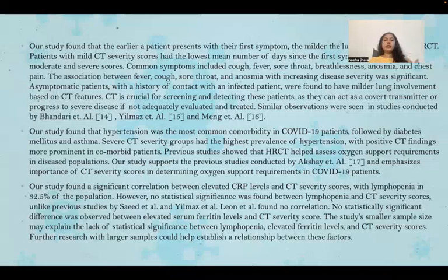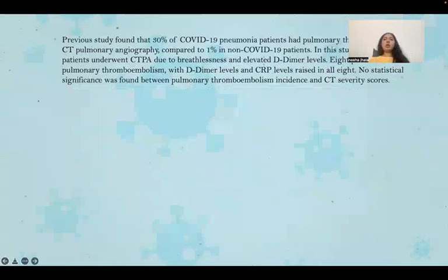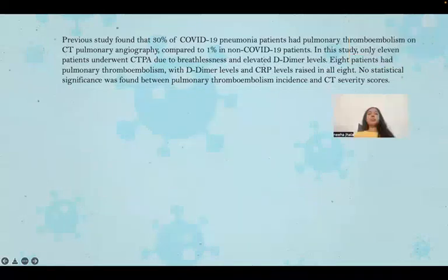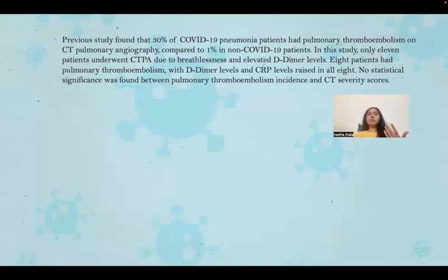Further research with larger samples could help establish a relationship between these factors. Previously done studies found that 30% of COVID-19 pneumonia patients had pulmonary thromboembolism on CT pulmonary angiography compared to 1% in non-COVID patients. In this study, only 11 patients underwent CTPA due to breathlessness and elevated D-dimer levels; 8 had pulmonary thromboembolism with raised D-dimer and CRP levels. No statistical significance was found between pulmonary thromboembolism incidence and CT severity scores.